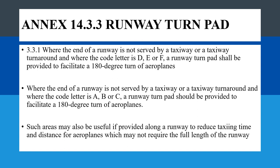Annex 14 states that where the end of a runway is not served by a taxiway or a taxiway turn-around, and where the code letter is D, E, or F, a runway turn part shall be provided to facilitate a 180-degree turn of airplanes. It also recommends that where the code letter is A, B, or C, a runway turn part should be provided to facilitate a 180-degree turn of airplanes. Such areas — the turn part — may also be useful if provided along a runway to reduce taxiing time and distance for airplanes which may not require the full length of the runway.